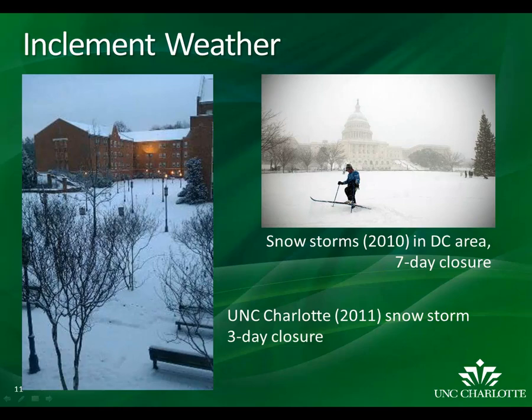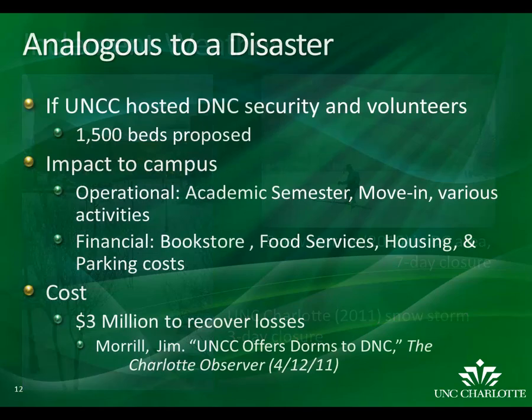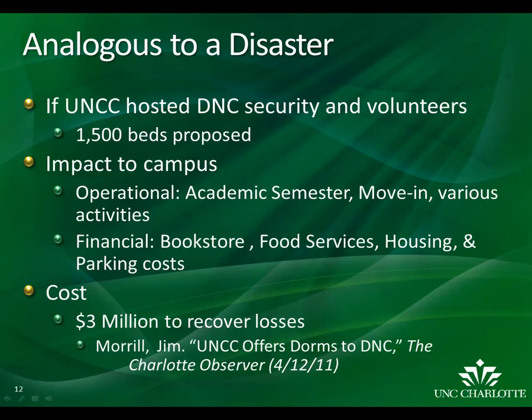In 2010, the entire DC, Maryland, and Virginia metro area were shut down for several weeks following two major snow events that struck the area. Similarly, UNC Charlotte experienced conditions such as that in January 2011 when the start of the spring semester was delayed due to inclement weather for nearly one week. Not all disruptions are due to a disaster, and using Continuity of Operations Plans are not limited to only disaster situations. Business interruptions come in many forms.